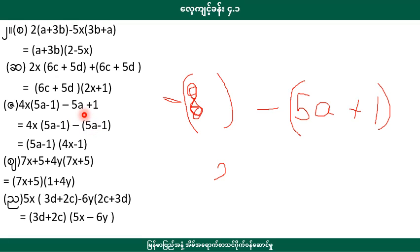This one is 6 x 5. This one is 7, 8 plus 5 plus 4y. These two dimensions are 4x created minus 1. 7x plus 5 plus 4y means 7x plus 5 plus 2x. Seven plus 5 is the 2.